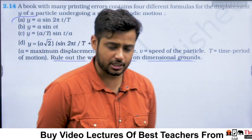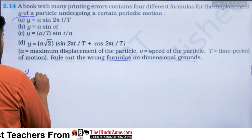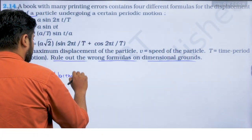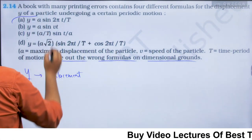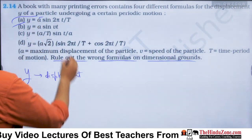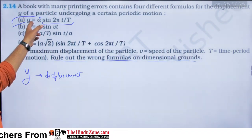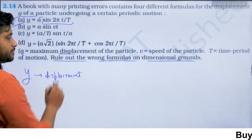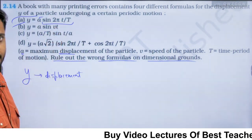By dimensional analysis, we identify which formula could be wrong. In all formulas, y is displacement and a is also displacement (length). So the right-hand side must also be displacement. The quantity sin(2πt/T) must be dimensionless — and since t is time and T is time period, 2πt/T is dimensionless, so the first formula is correct.